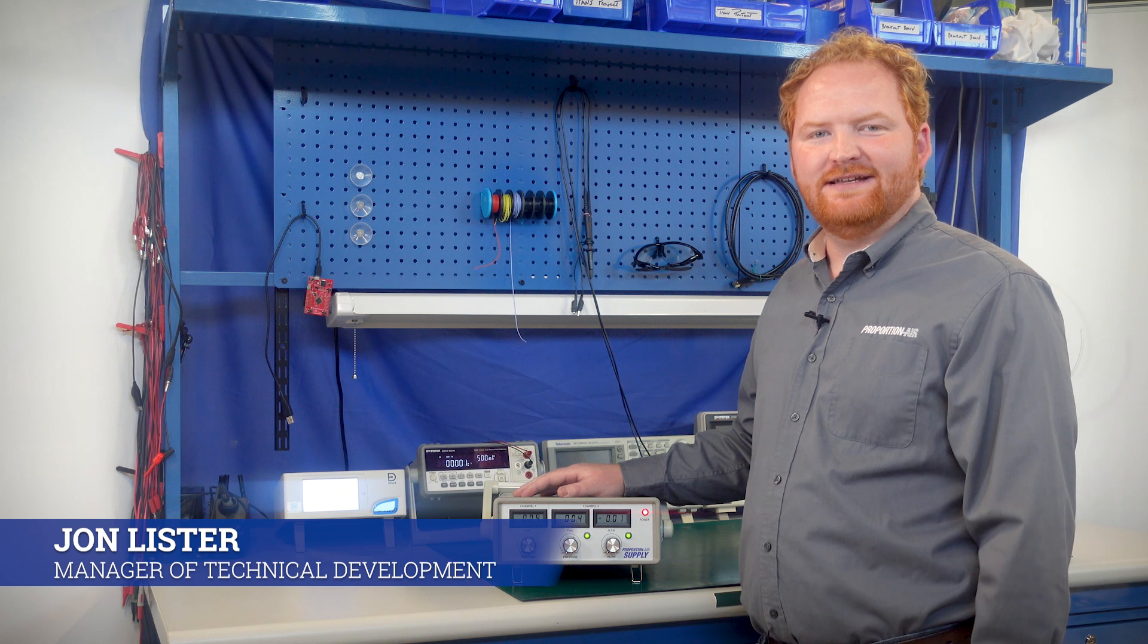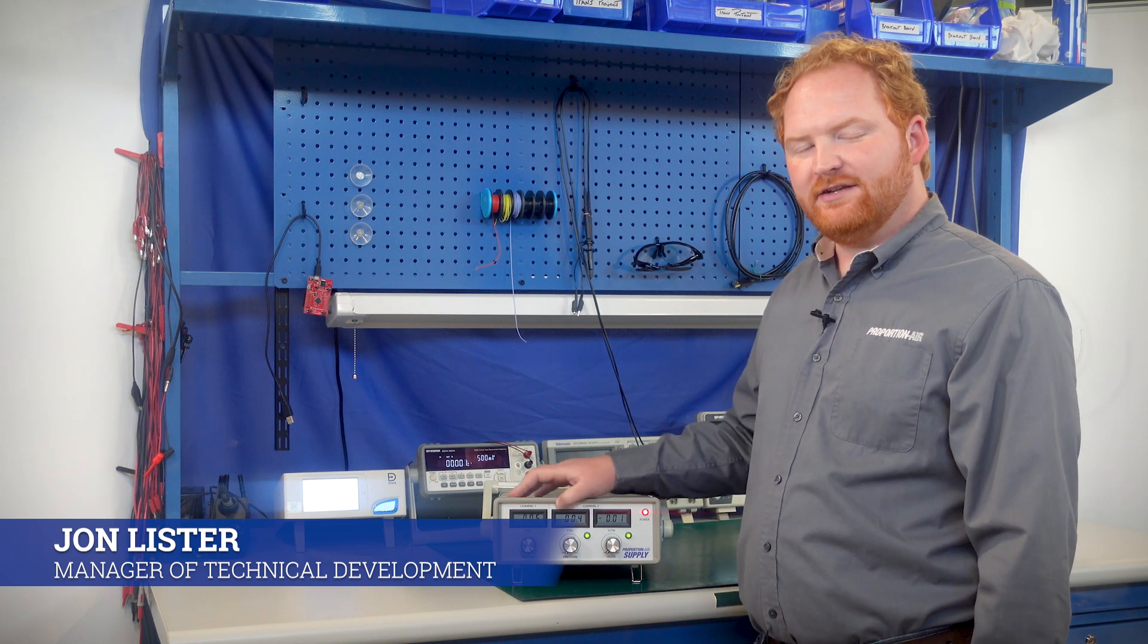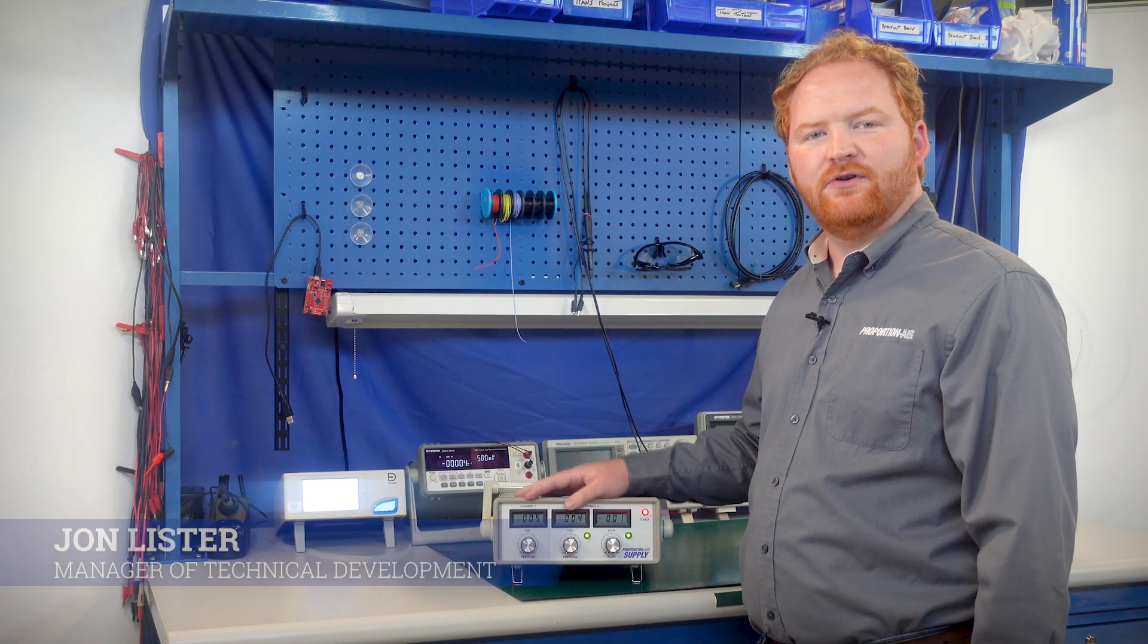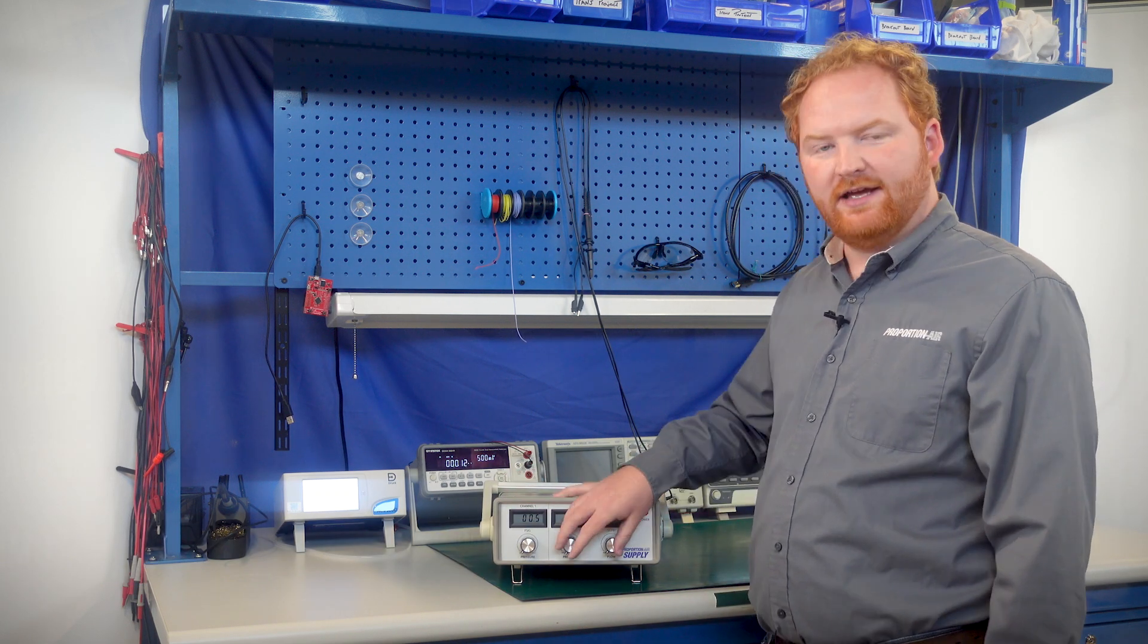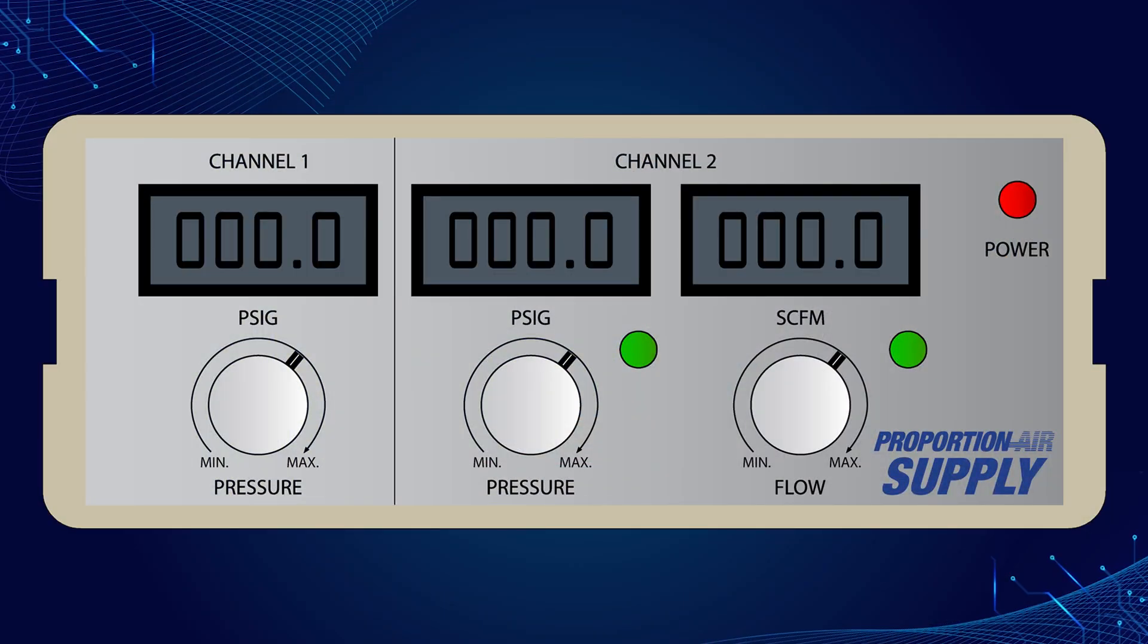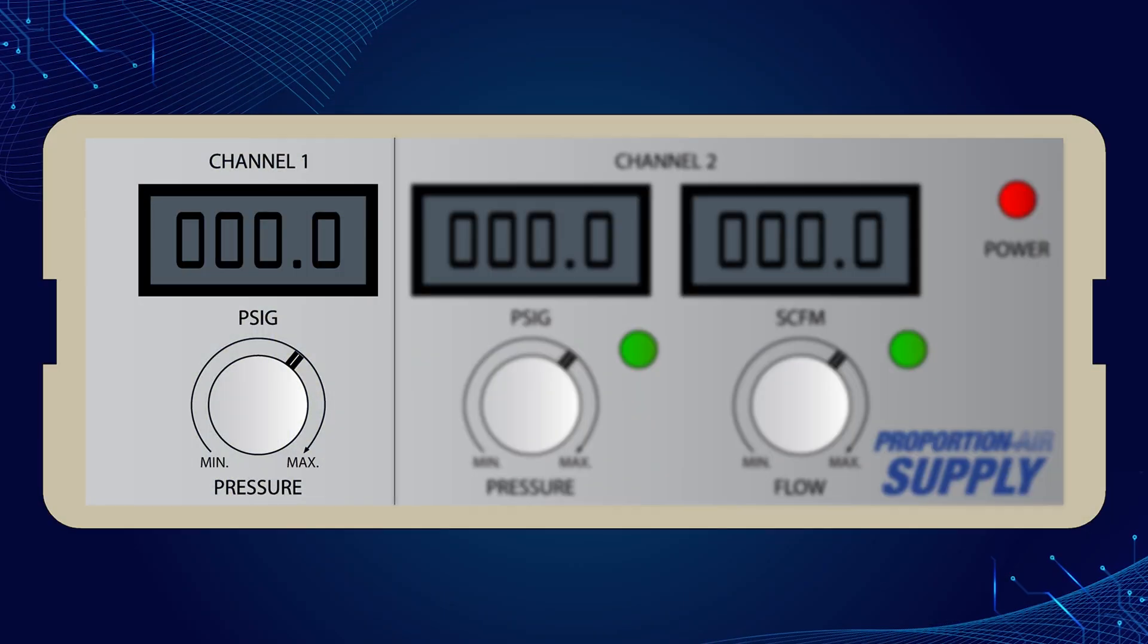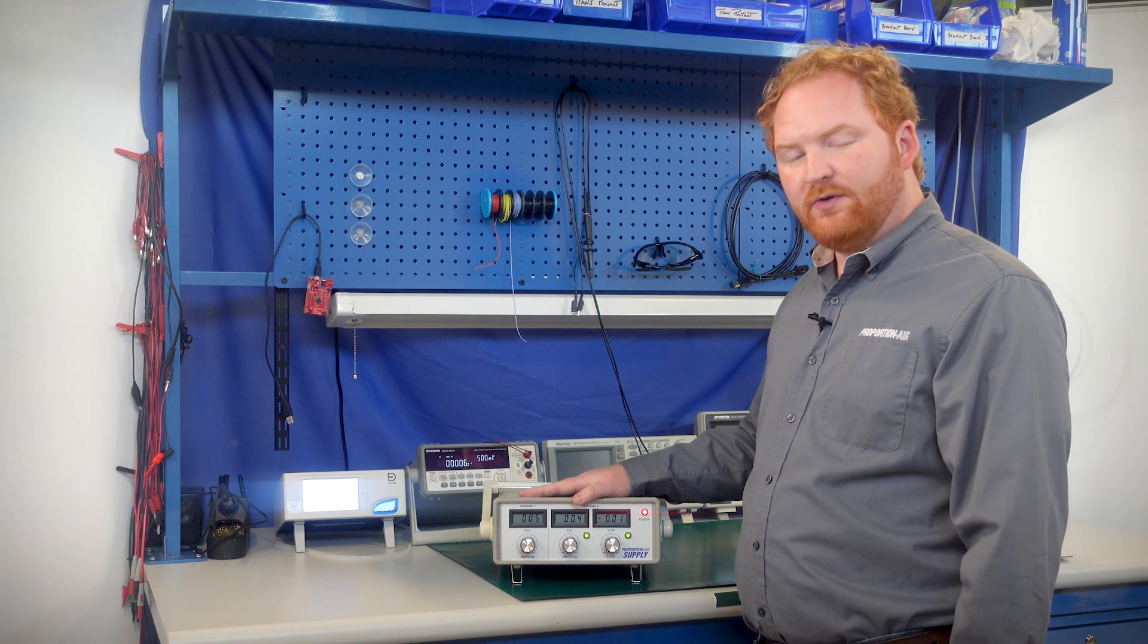The Proportion Air Supply is the pneumatic equivalent of an electronic power supply. On an electronic power supply you control the voltage and the current. On the Proportion Air Supply you control the pressure and the flow. There are two channels: channel one regulates pressure only, and channel two regulates pressure and flow.